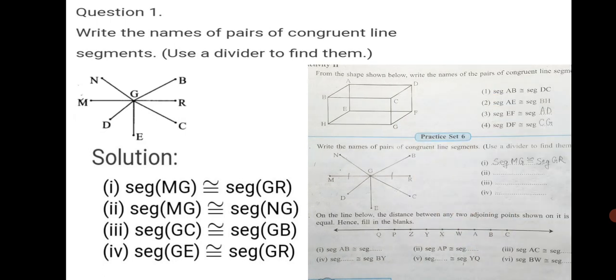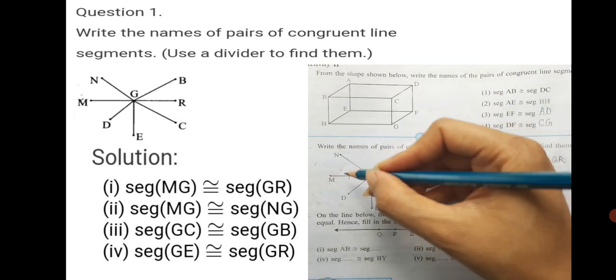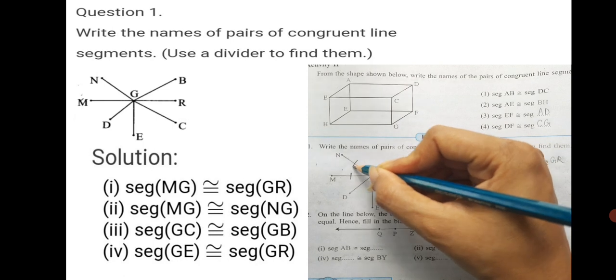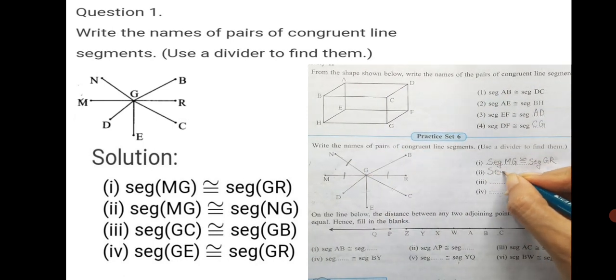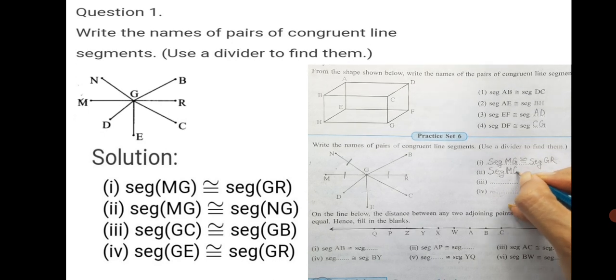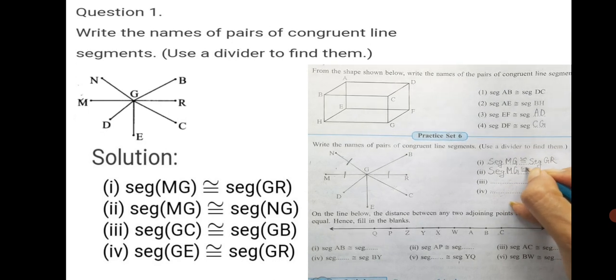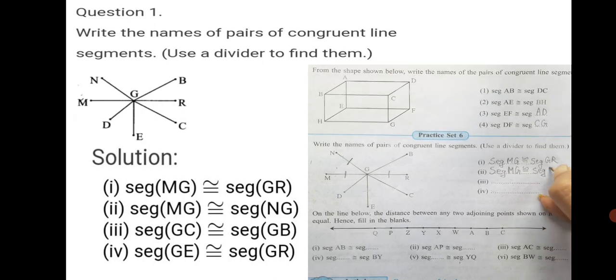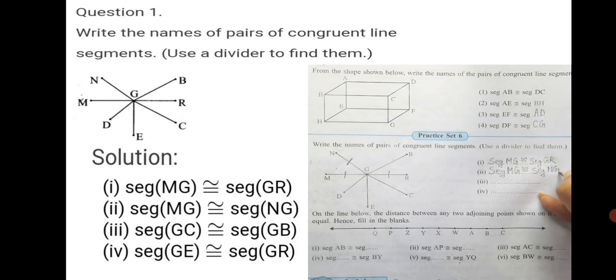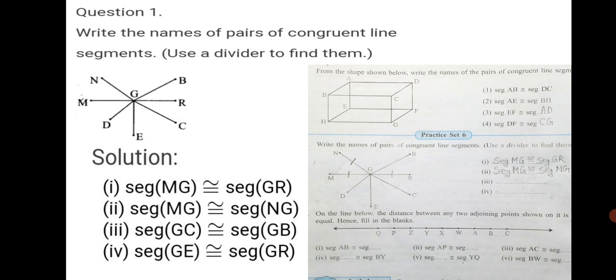Now, I see that MG and NG is also congruent. I will mark the sign of congruence that even this one is equal. Seg MG and we put the symbol of congruence is congruent to seg NG. This way we have got first two answers.